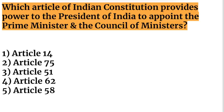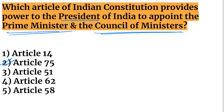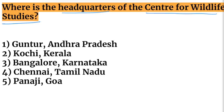Next question: which article of the Indian Constitution provides the power to the President of India to appoint the Prime Minister and the Council of Ministers? The answer is Article 75 of the Indian Constitution.